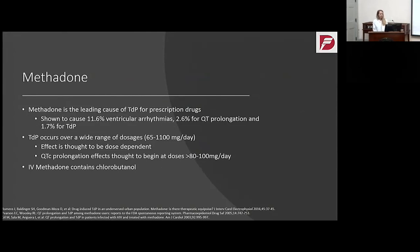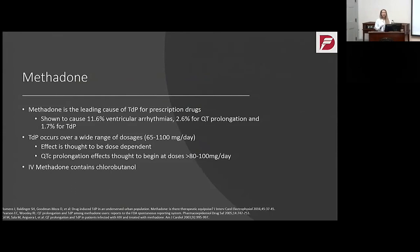Torsades can happen over a wide range of doses — found in doses from 65 milligrams to 1,100 milligrams a day. This is thought to be dose-dependent, with risk increasing with more methadone on board as well as with duration of therapy. QT prolongation effects are thought to begin at doses of 80 to 100 milligrams per day, where we really need to nail down good monitoring. Interestingly, the IV version of methadone causes the most QTc prolongation of all formulations because it contains a preservative, chlorobutanol, which has an additive QT prolongation effect.